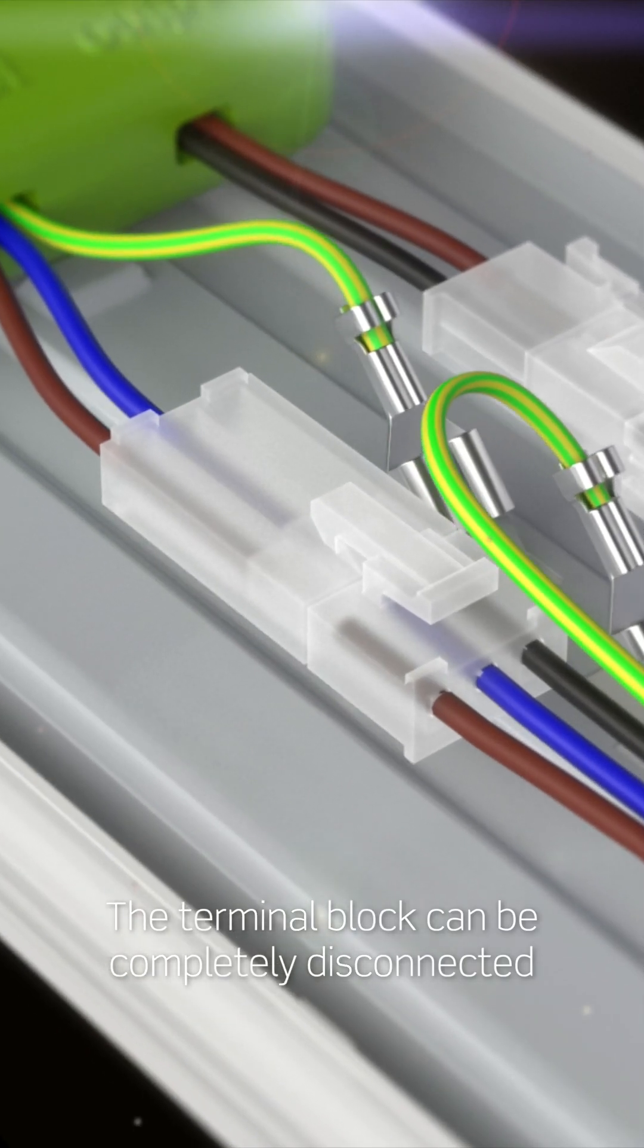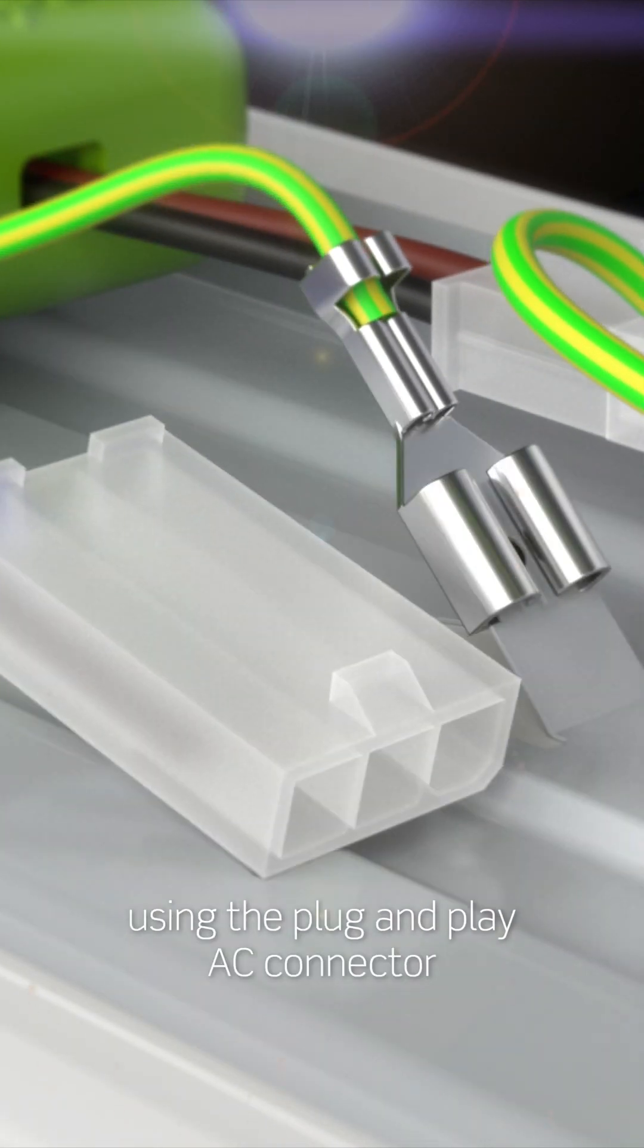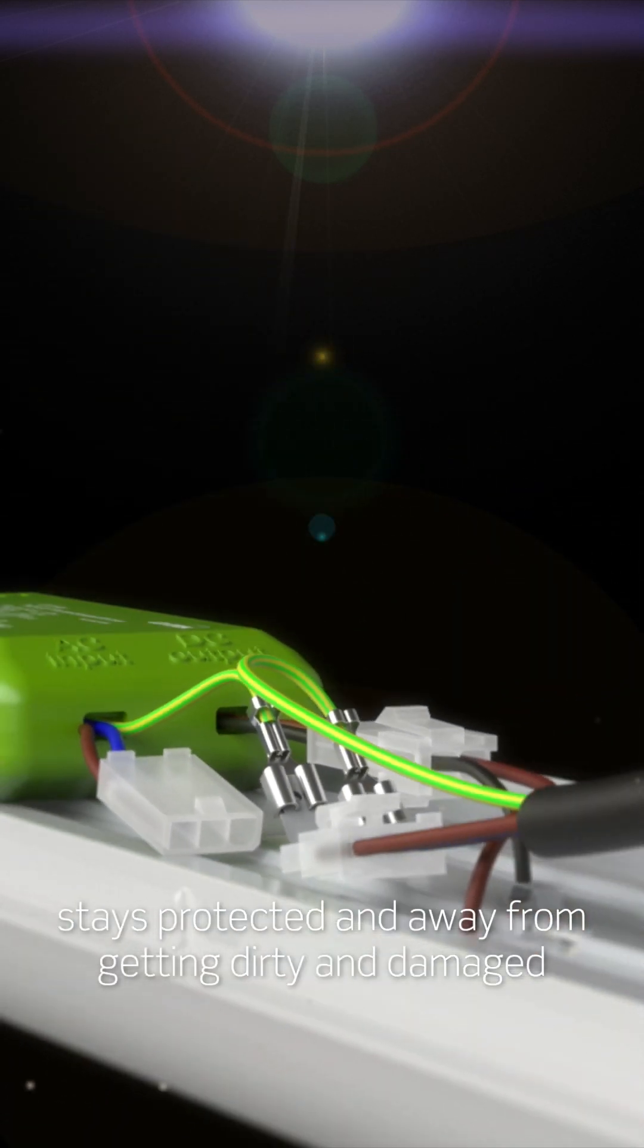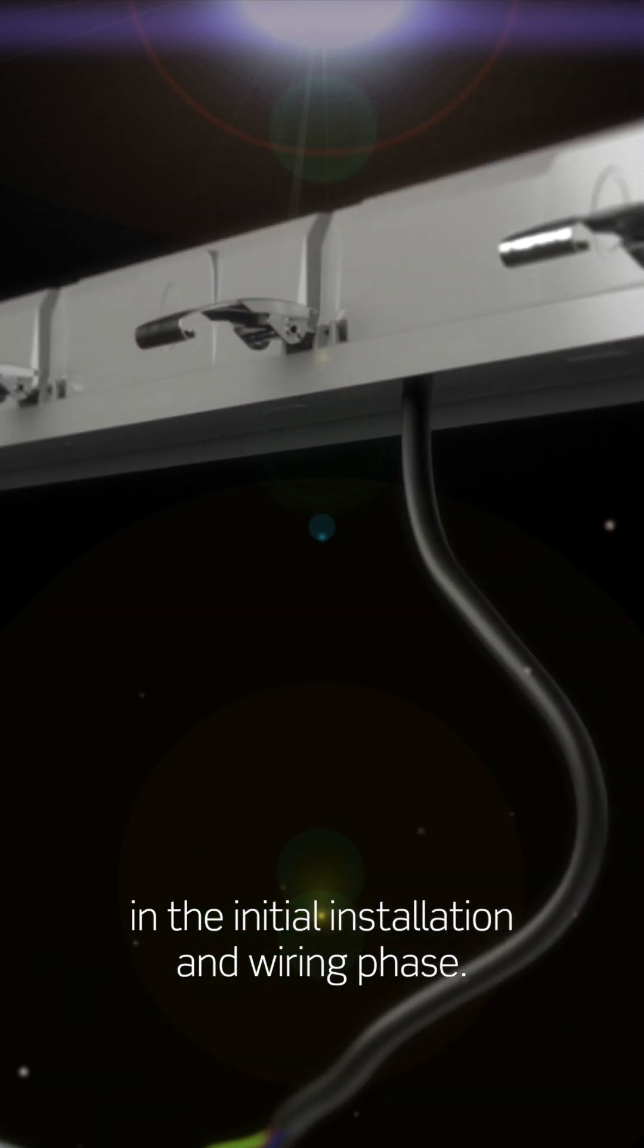The terminal block can be completely disconnected from the LED gear tray using the plug-and-play AC connector to ensure that the LED gear tray and diffuser stays protected and away from getting dirty and damaged in the initial installation and wiring phase.